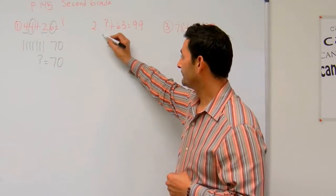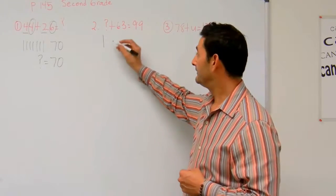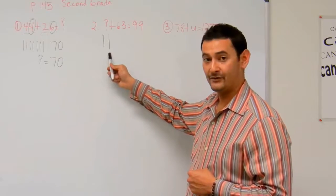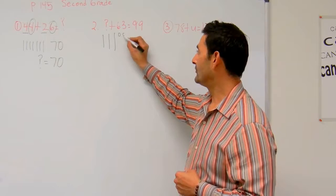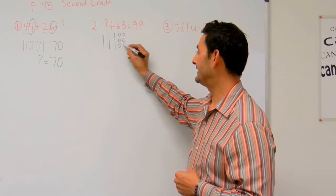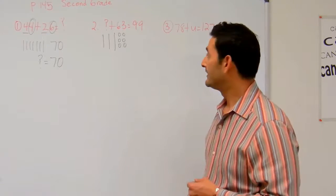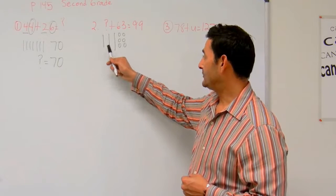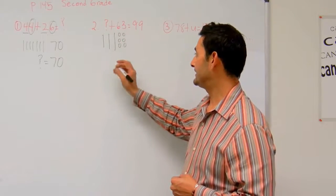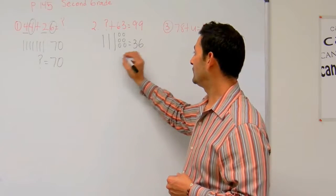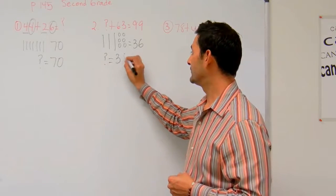Starting from 63: 73, 83, 93, 94, 95, 96, 97, 98, 99. Let me count what that is: 10, 20, 30, 31, 32, 33, 34, 35, 36. So question mark equals 36.